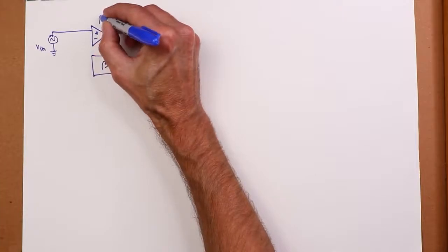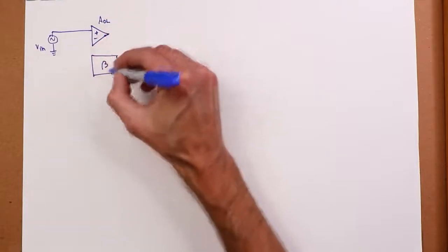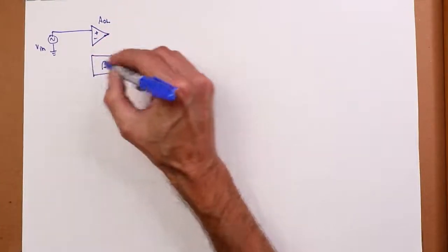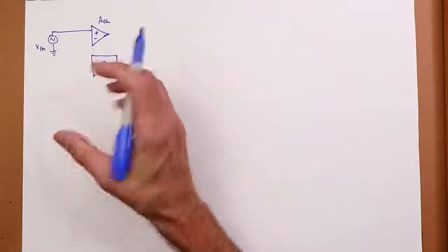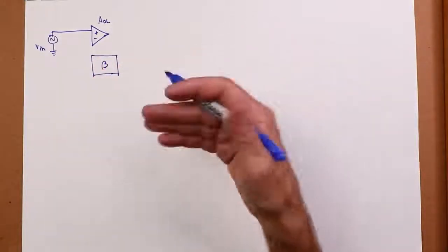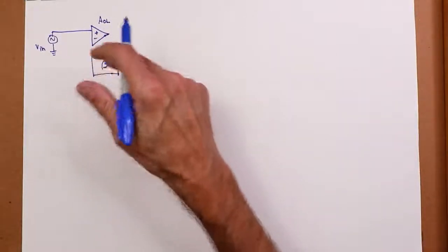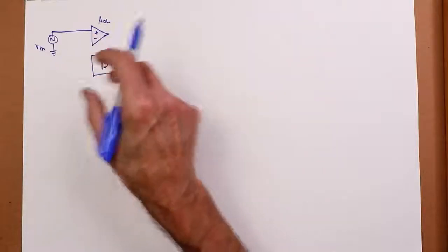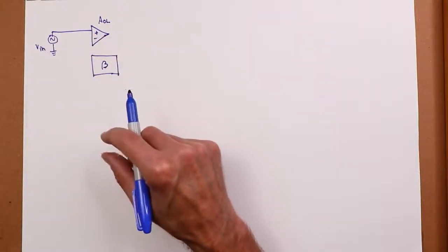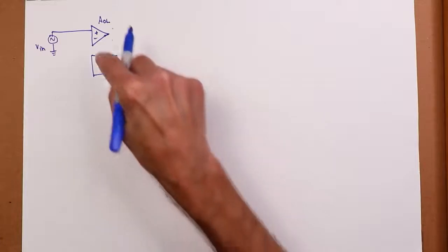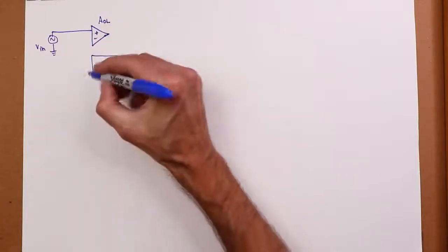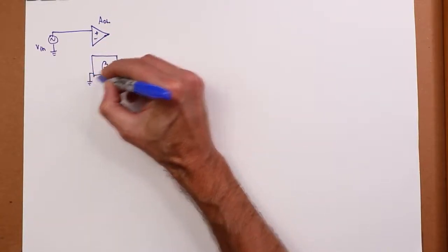So this op amp has an open loop gain, AOL. We have a feedback factor, beta, which is really just a gain characteristic. In fact, ordinarily, this is just a voltage divider, so it's a fractional value. And what we're going to do is hook this up, as I said, in series with the input. So here's our ground connection.